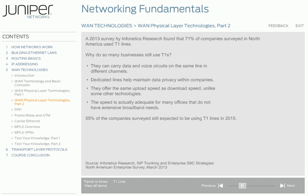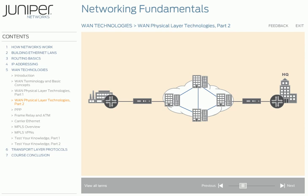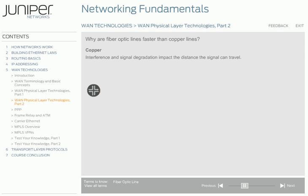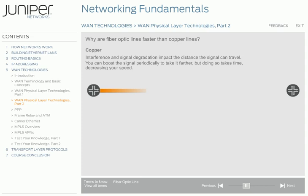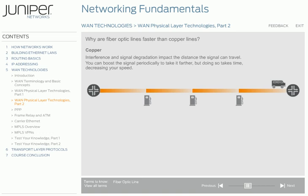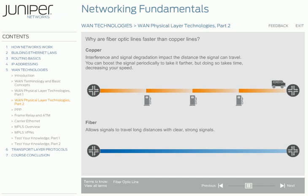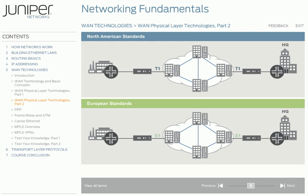To build WANs fast enough to constitute the cloud you see in most network diagrams, T1s and T3s are not sufficient. Carriers have moved from copper cables to fiber optics, and different standards have developed for fiber optics. Copper cables are impacted by interference from other cables, and signals sent over copper cables degrade over long distances. You can boost the signal on a copper cable to take it farther, but doing so takes time, decreasing your speed. Fiber cables, which are made of glass, can go well beyond the distance limitations of copper with clear, strong signals. You can go much faster without interference, and because fiber allows signals to travel long distances without degradation, you don't have to stop to boost your signal as often. Just as with T1 and T3 lines used in North America, and E1 and E3 lines used in Europe, similar standards were developed for fiber optic lines.